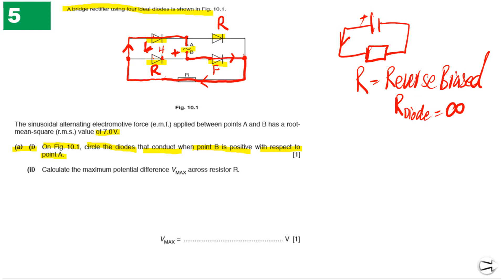Only two diodes conduct in this configuration. The first diode and the second diode both conduct. These are the two diodes we need to circle. This is our final answer for part A1.